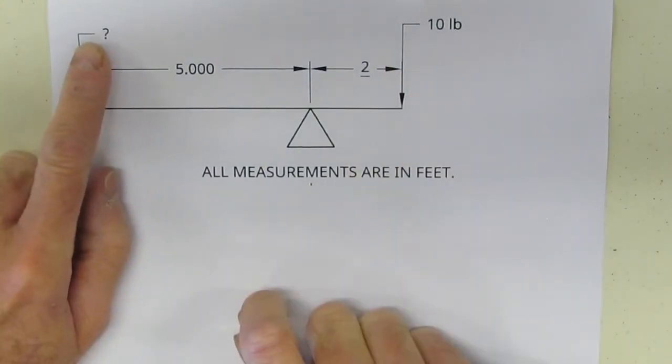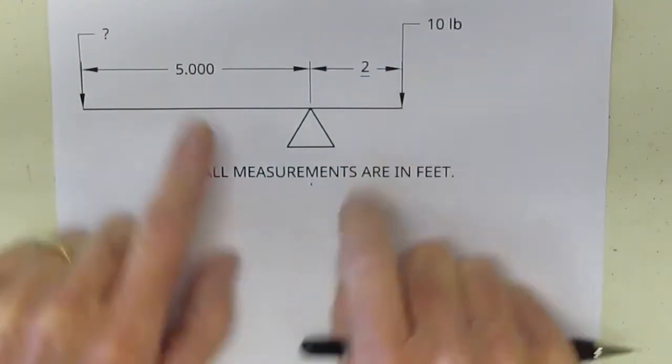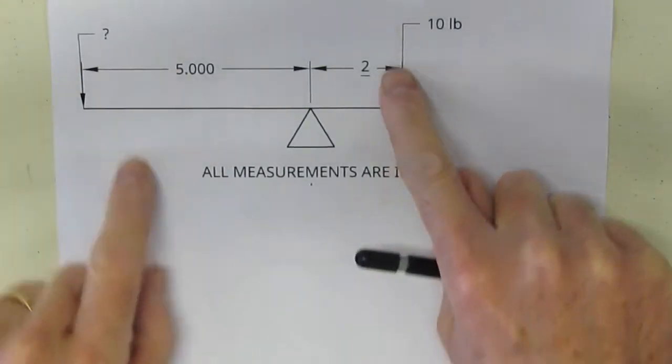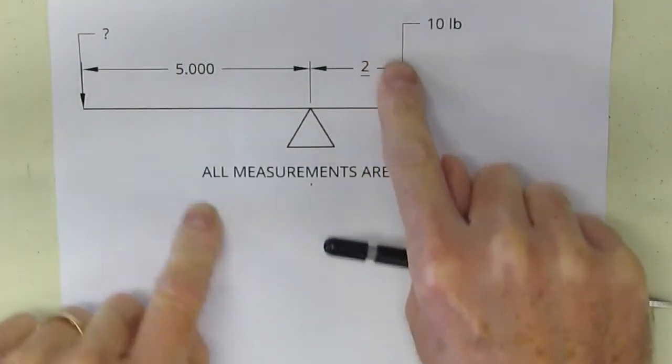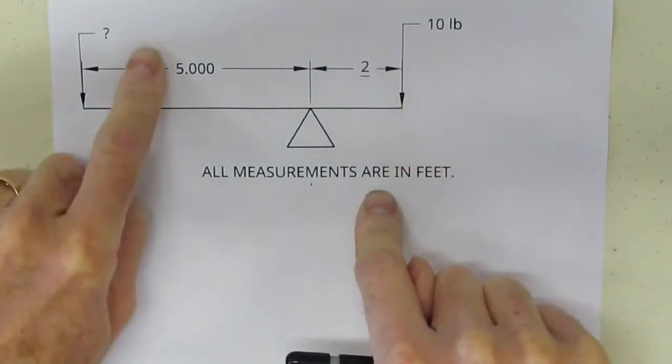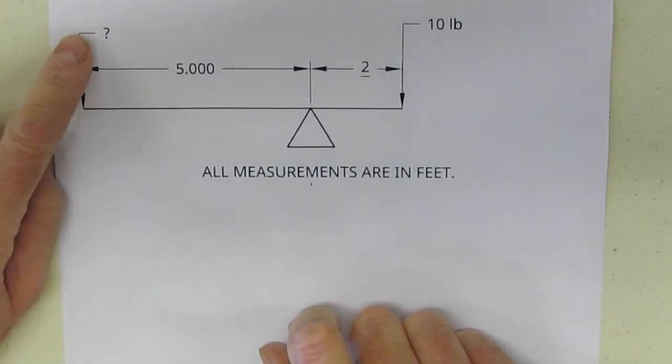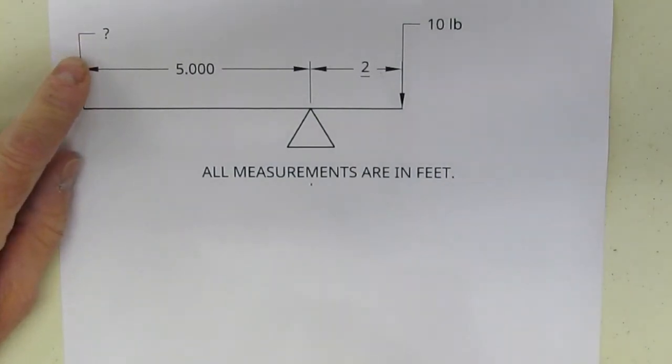I've got a force over here. I don't know the force here. I have a length here and a length here. So when we look at this, we realize that this can turn and we know that anything that turns can have a torque applied. So we're looking for force.